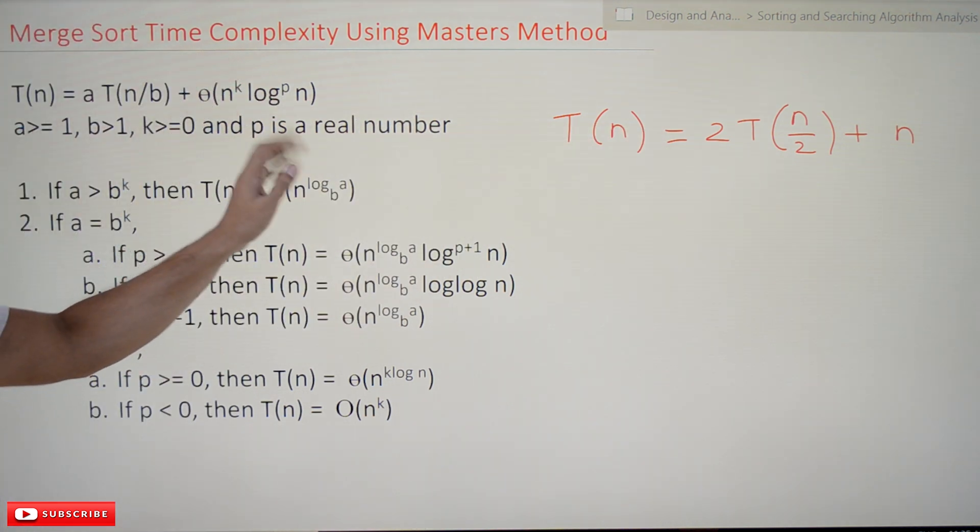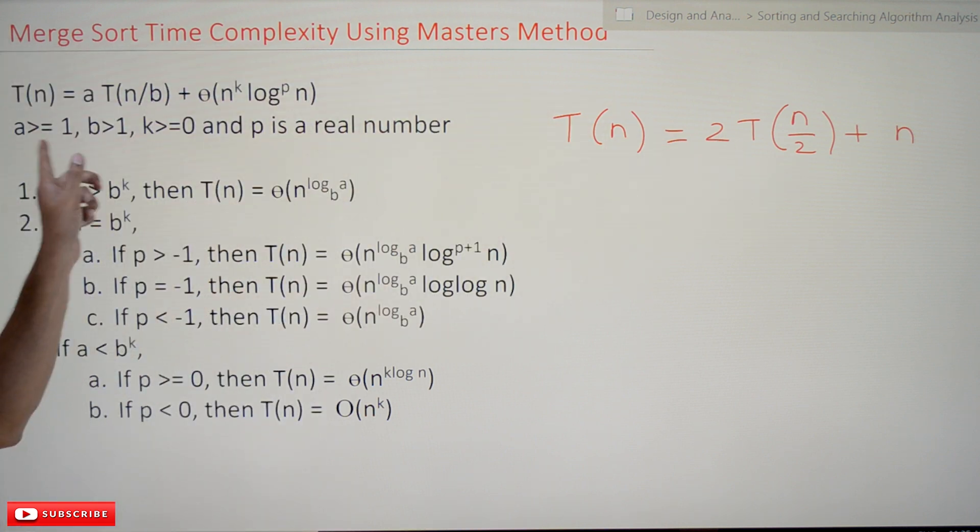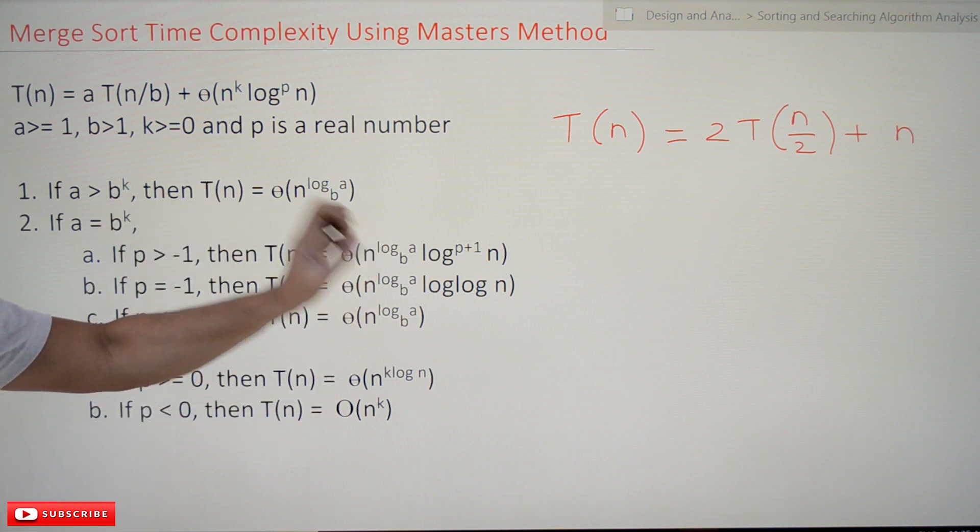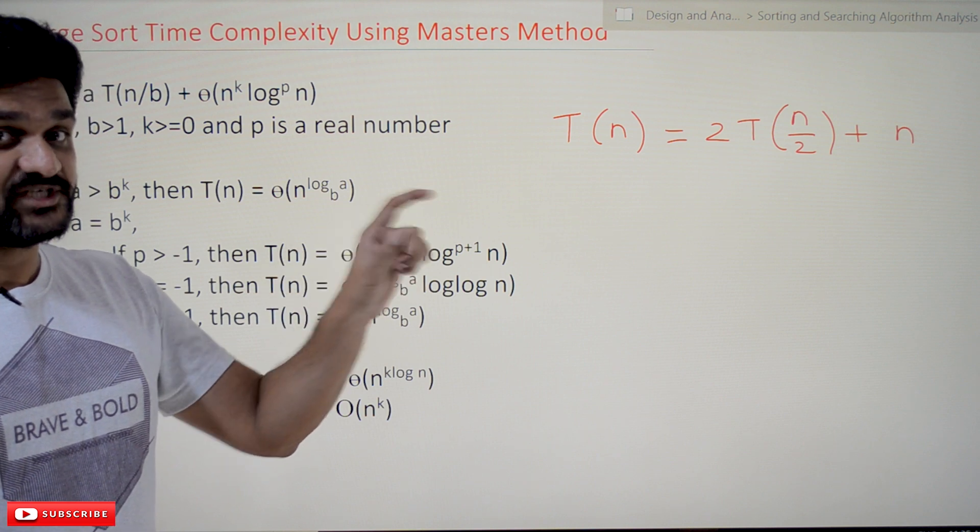Now based upon this recurrence relation, we have to see whether these conditions are getting satisfied or not, or whether this equation is in this form or not. If it is in the form and satisfying all these conditions, then we have to go for these options and choose the right option.